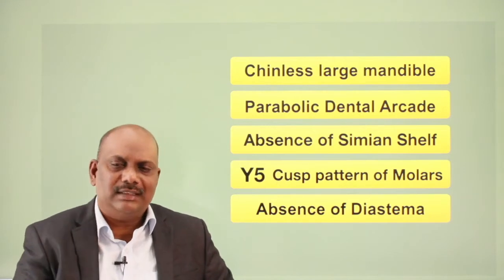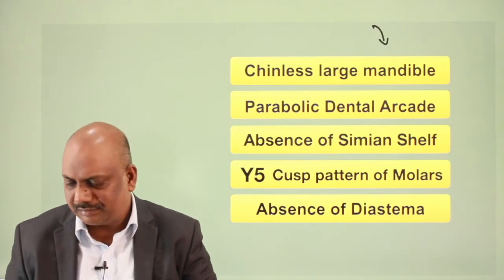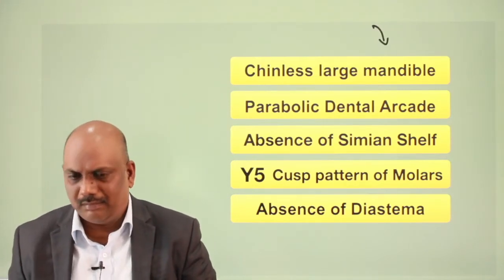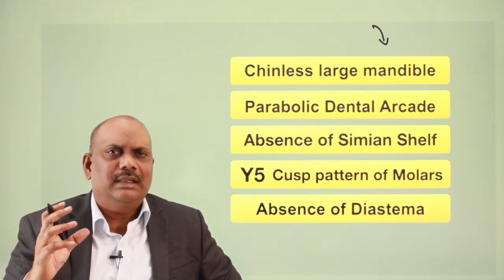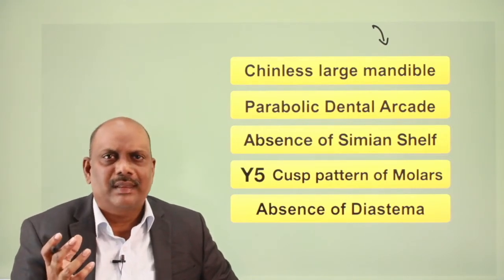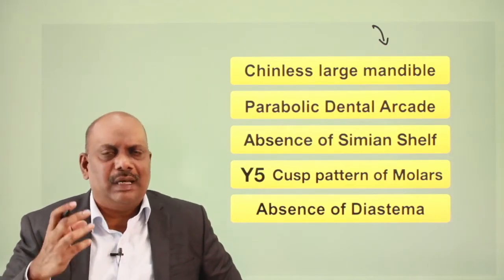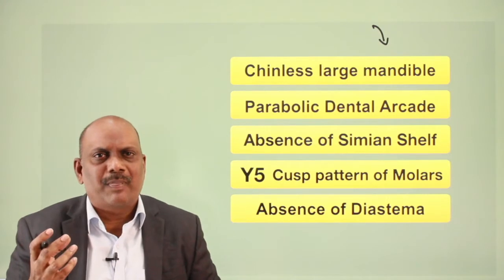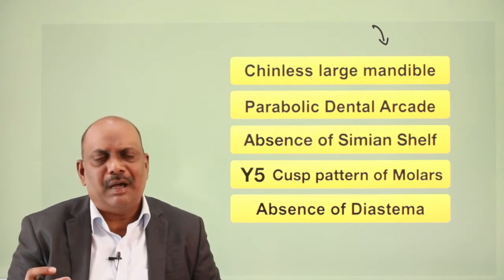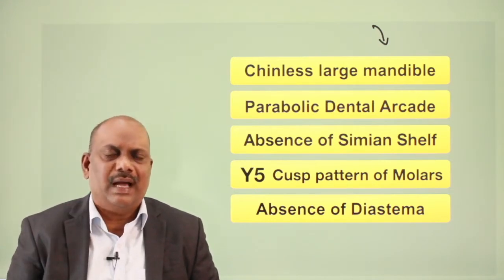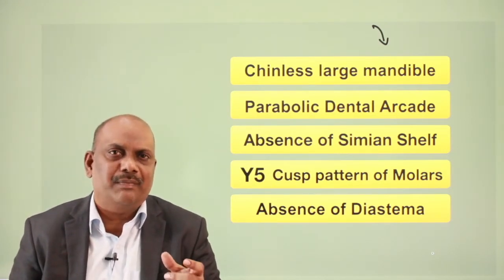The lower jaw, technically called the mandible. The mandible of Australopithecus is very large and massive. It was large and massive because there was a need for Australopithecus to bite and chew raw meat, hard nuts, and some fibers. At the same time, the jaw was chinless. Absence of chin was a very important feature of most ape mandibles.